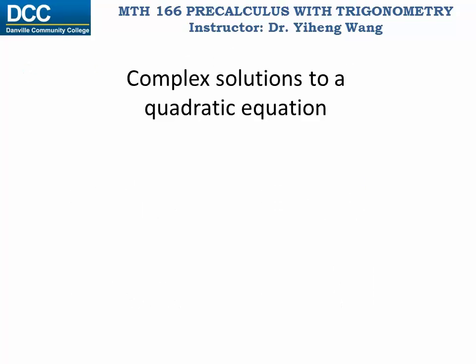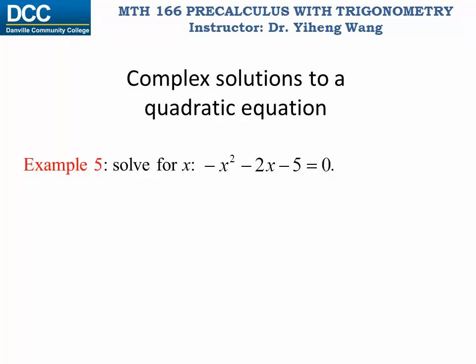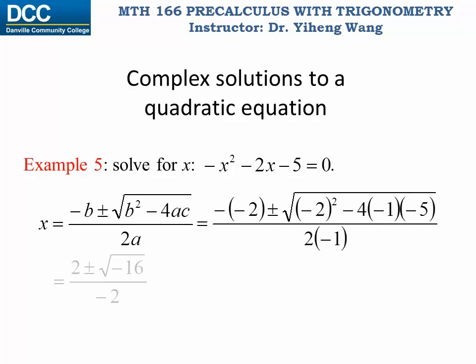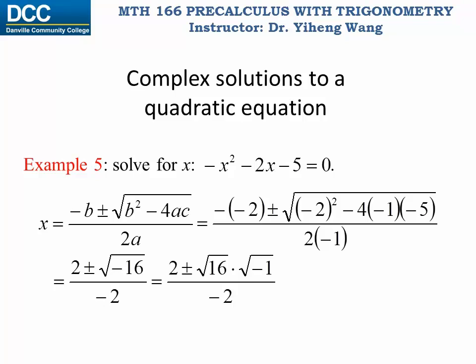In case you're wondering why in the middle of studying polynomial functions we are suddenly studying complex numbers: the reason is that now we can find complex zeros for polynomial functions and complex solutions for polynomial equations. For example, solving this quadratic equation using the quadratic formula and substituting in a, b, and c, we get two plus or minus the square root of negative sixteen over negative two. Since we know the square root of negative sixteen equals four i, this becomes two plus or minus four i over negative two, which gives negative one plus or minus two i — the two complex solutions to this quadratic equation.